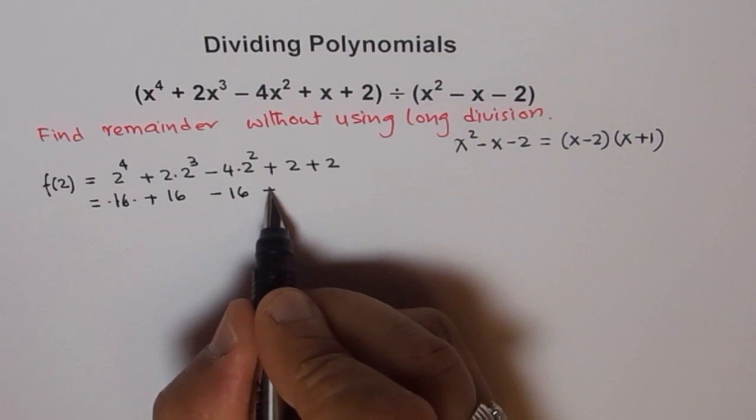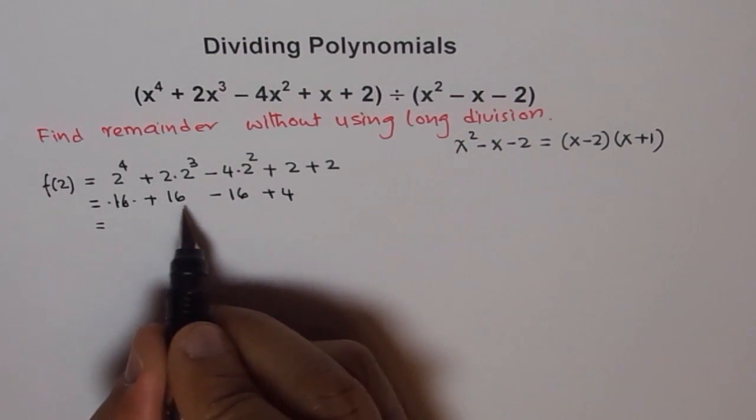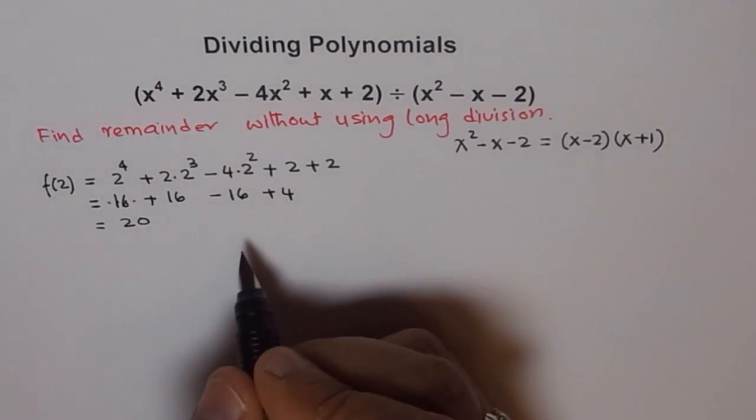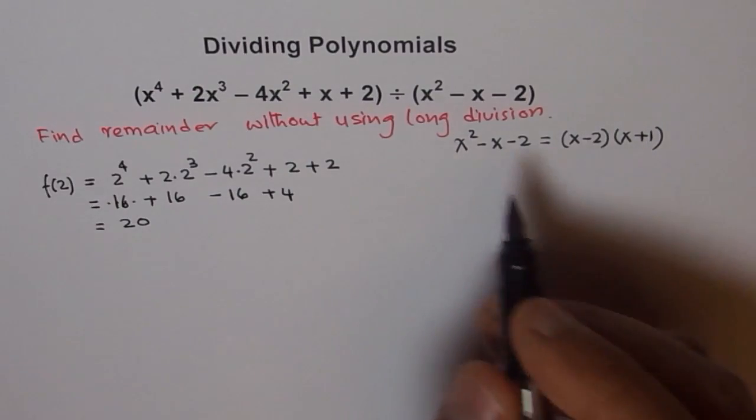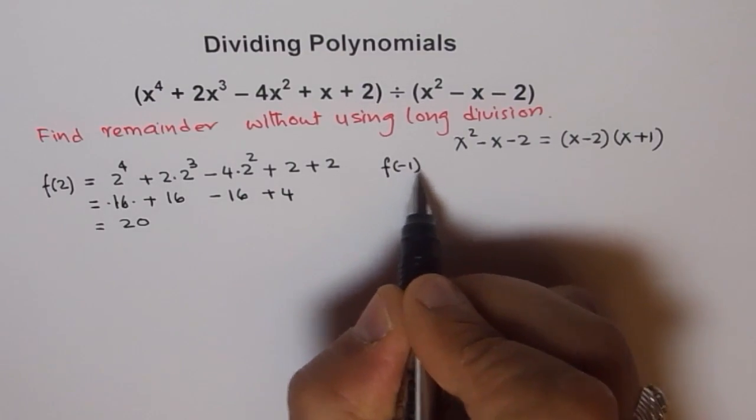Let me write plus 4. So here, this is equal to, well, 16 and 16 cancel out, 16 plus 4 is 20. So f(2) is 20 for us. Now, what is f(-1)? Let's calculate that also.